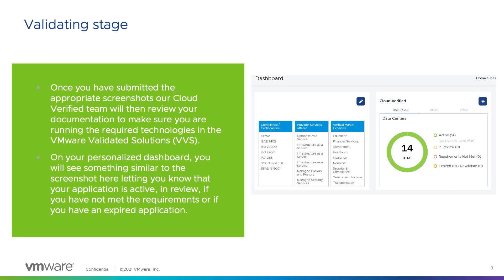Now that you have submitted your screenshots and your application, you are in the review stage. Our Cloud Verified team will go in and review your documentation to make sure you are running the required technologies in the VMware Validated Solutions. At that point, our team will either approve or reject your application. You will get an email letting you know that you have been approved or rejected. If you are rejected, we will give you a specific reason why, and you can submit your application again.